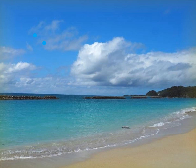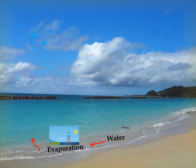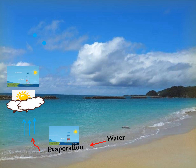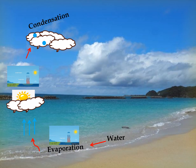Water transforms its state as it goes through various processes in the water cycle. When liquid water transforms into gaseous form, it is called evaporation — due to heat, the water converts into water vapor. When these water vapor rise upward, due to the lower temperature at high altitude, they convert back into water droplets or liquid water. This process is known as condensation — the conversion of water from gaseous form to liquid water.